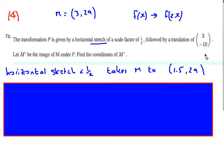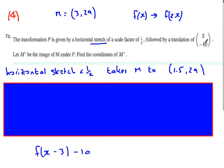So that's the first bit done, followed by a translation of (3, -10). Let's see what that would look like in function notation. We basically would end up with f(x - 3) - 10. So the translation: 3 units to the right, we represent that by x minus 3, and then 10 units down, so minus 10. This simply means we move the x-coordinates by 3 and the y-coordinates down by 10.